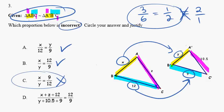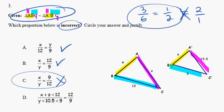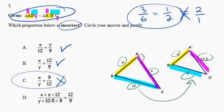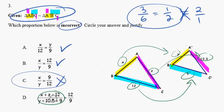This is the incorrect one we were looking for. Let's verify the last one. Here we're comparing x plus z plus 12 — the perimeter of the big — over y plus 10.5 plus 9, the perimeter of the small. It's asking: is the ratio of the perimeter of the big to the perimeter of the small the same as 12 to 9? Because these two triangles are similar, all corresponding sides have the same ratio of 12 to 9. Since each individual part has the ratio 12 to 9, the sums — the perimeters — will also have the ratio 12 to 9. So the ratio of the perimeters equals the ratio of the sides for similar triangles. That is correct.